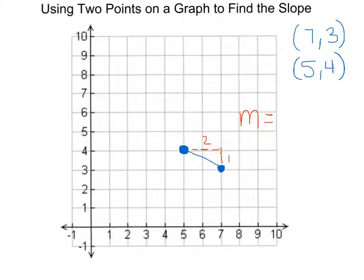Okay, let's look at the problem. We had to plot the two points: 7, 3 - move over 7, go up 3, that's the first point. For the second point we need to go over to 5 and then go up to 4. So we have our two points. We connect the line.